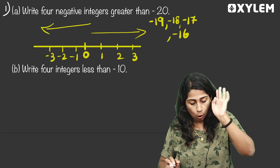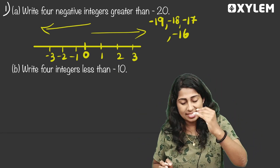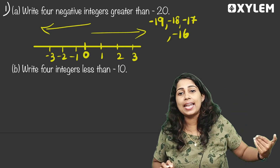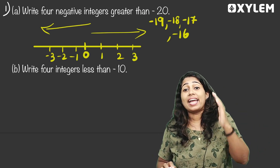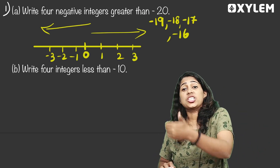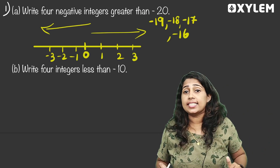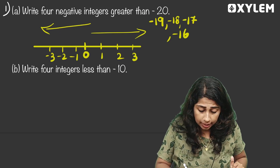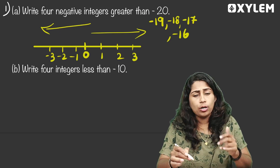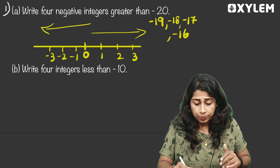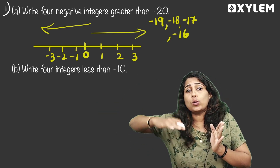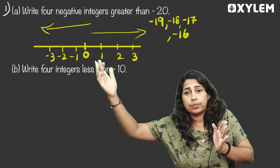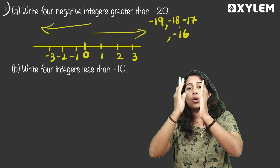Write 4 integers less than negative 10. Negative 10 — we need 4 integers less than negative 10. The value on the number line: 0, 1, 2, 3, 4, 5 on the right.